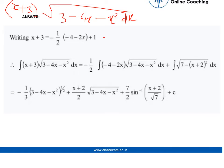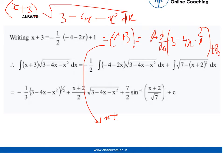Now, this we can solve it further by writing it like x plus 3 is equals to a into dy dx of 3 minus 4x minus x square plus b. So, in solving this term further, we get x plus 3 is equals to minus 4a minus 2ax plus b.